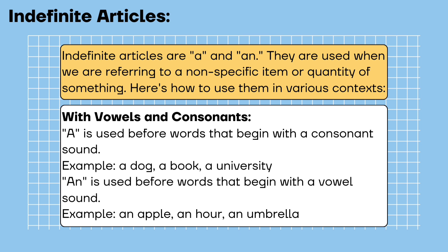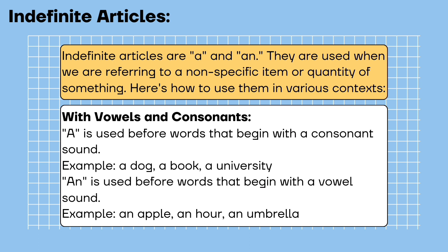Indefinite articles are 'a' and 'an.' They are used when we are referring to a non-specific item or quantity of something. With vowels and consonants: 'a' is used before words that begin with a consonant sound. Example: a dog, a book, a university. 'An' is used before words that begin with a vowel sound. Example: an apple, an hour, an umbrella.